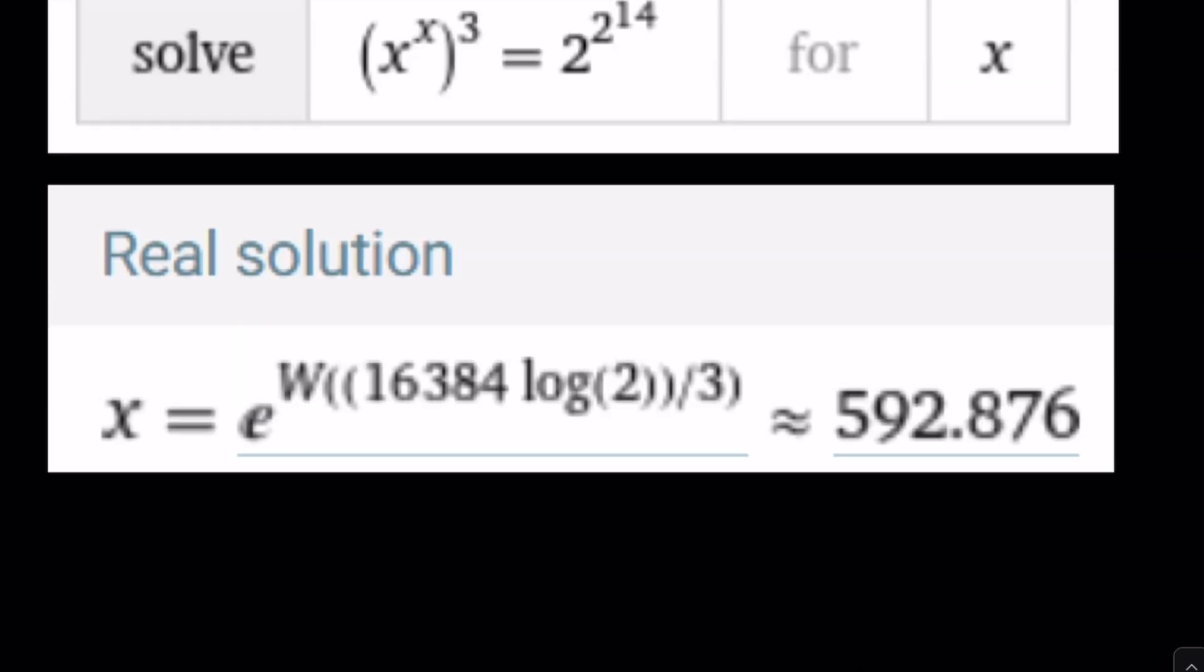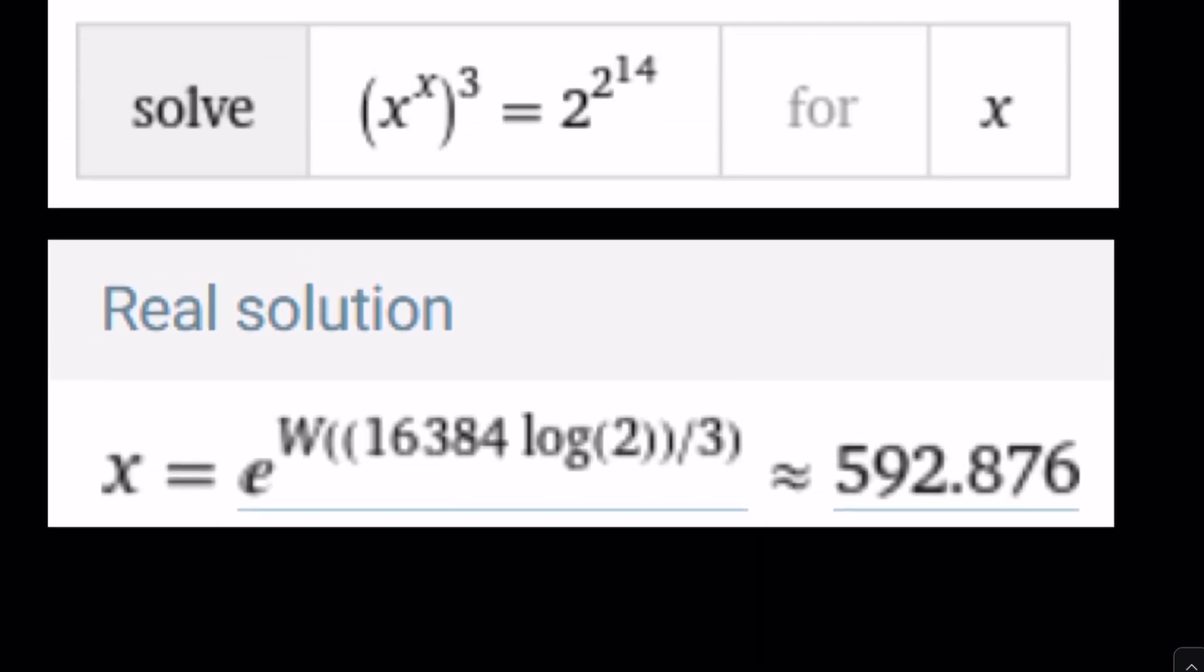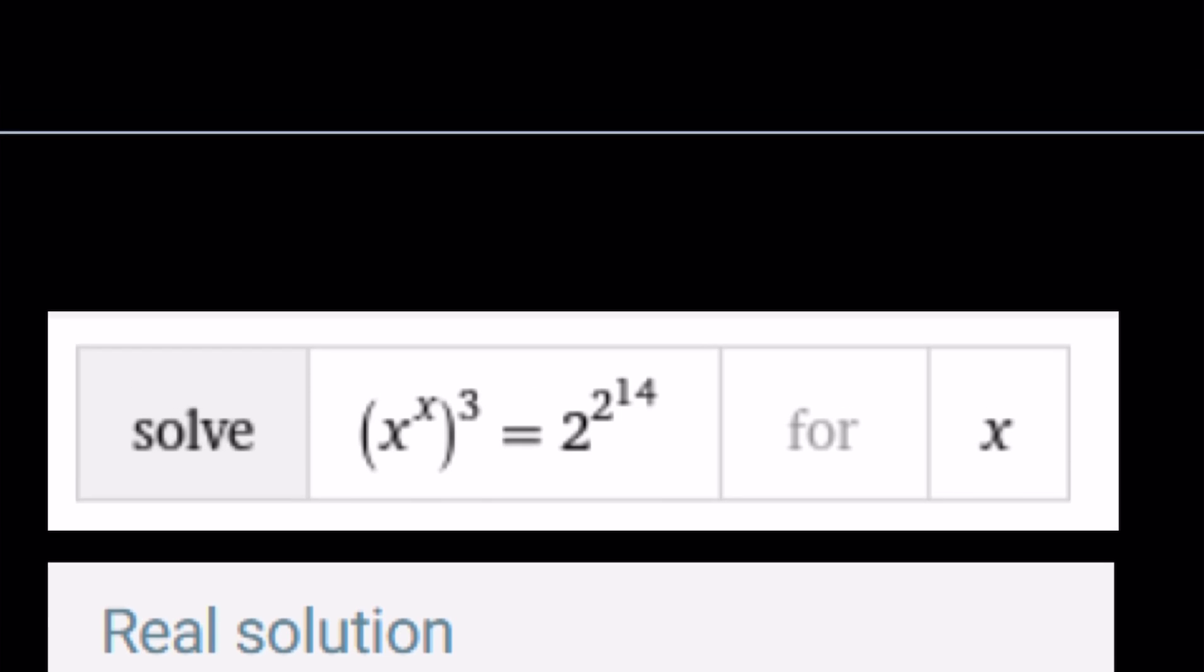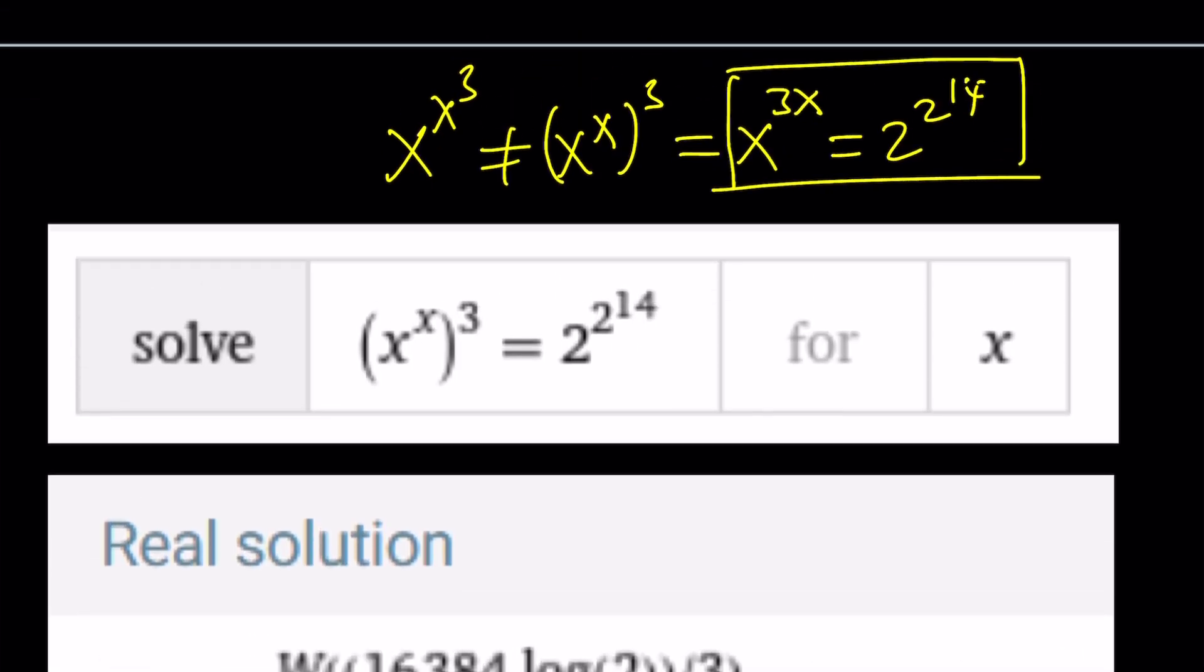Let's continue with the solution. We have this equation which is x to the power x to the power 3. By the way, I wrote this, but this is not the solution to our equation. Because when we say x to the power x to the power 3, when I write something like this, this is not what I mean. Because this can be expressed as x to the power 3x. So the solution that you see from Wolfram Alpha is actually the solution for this equation, which we're not interested in. But I just wanted to show you, if you make a mistake, that's what you get.